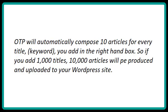OTP will automatically compose 10 articles for every keyword you add in the right-hand box. So if you add 1,000 titles, 10,000 articles will be produced and uploaded to your WordPress site.